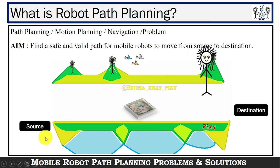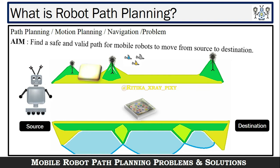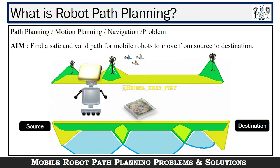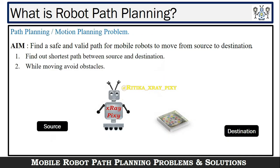A human can reach from source to destination without any problem. But in the case of a mobile robot with no proper training, the result is problematic. Our aim is to find the shortest path that is safe and obstacle-free, so that the mobile robot can easily travel the distance from source to destination without any problem.